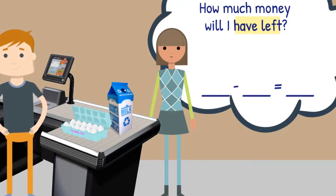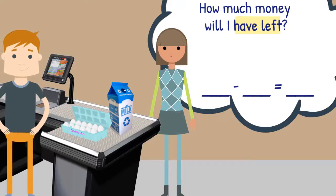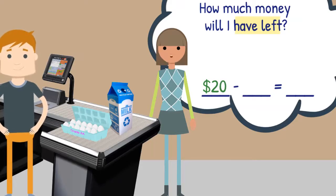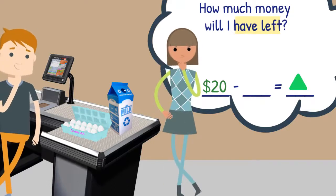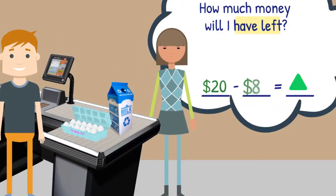We know we are starting with $20, so that number will go here. The missing information is how much money we will have left over after shopping, so we'll use a symbol to show that here. This space will be used for the amount of our order. Do you remember the total of our order? That's right! I spent $8.